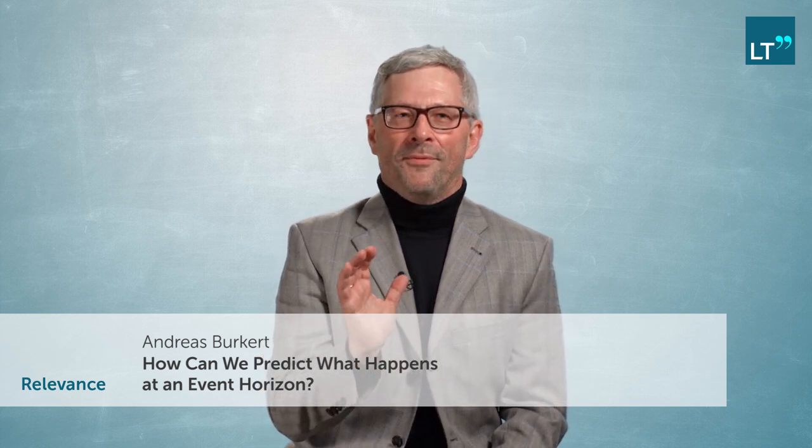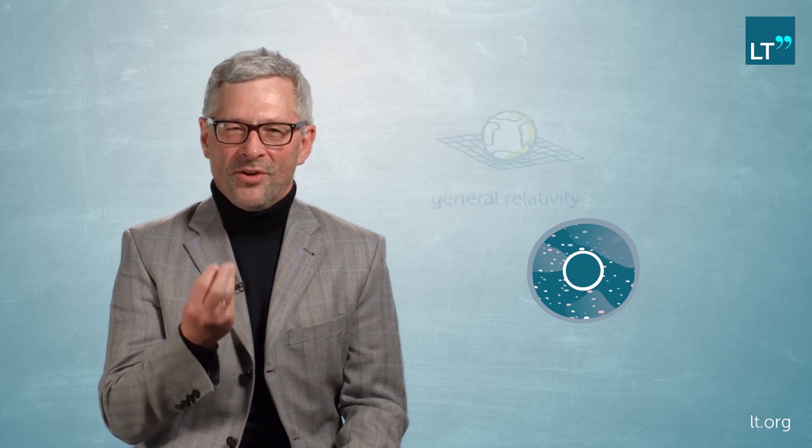The black hole is special because it has an event horizon. The event horizon is the place where light can still disappear from the black hole, and a little farther in light is stuck. And the event horizon is a fascinating place, it is a prediction of general relativity.